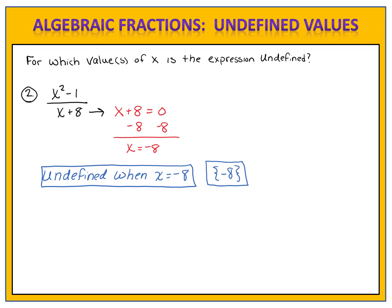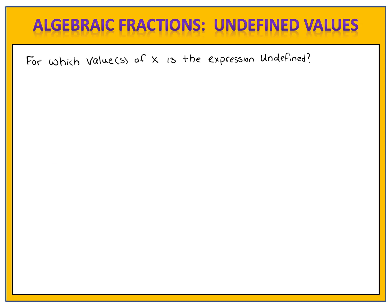Remember why negative 8 is the value that makes this fraction undefined. If we substitute negative 8 in place of x, we find that we have 63 divided by zero. We can't divide by zero, and therefore negative 8 is an excluded value — it causes the fraction to be undefined.